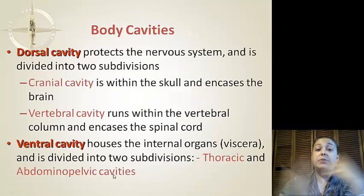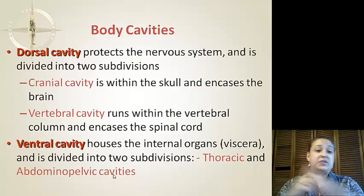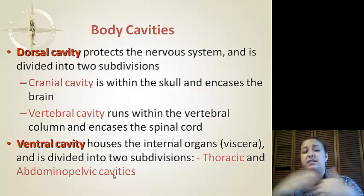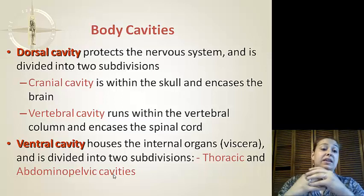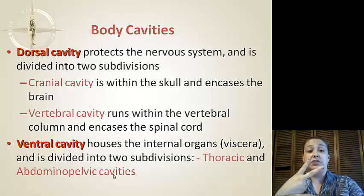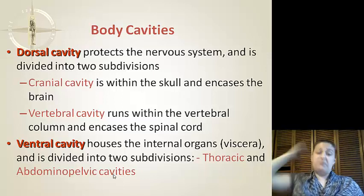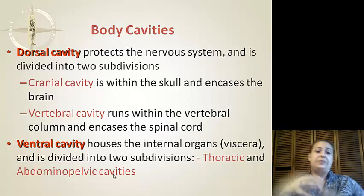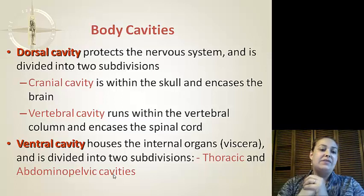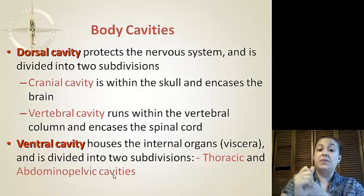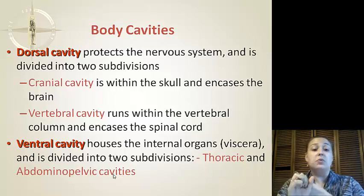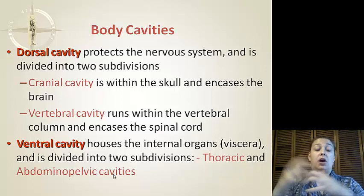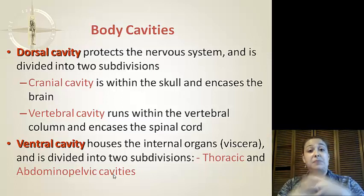Body cavity. When we look at the body as a whole, we have certain body cavities — basically two big ones, and they have other cavities within. The dorsal cavity protects the nervous system and is divided into two subdivisions. Dorsal refers to the back portion. This back cavity houses the cranial cavity within the skull, encasing the brain, and the vertebral cavity, which runs with the vertebral column and encompasses the spinal cord.